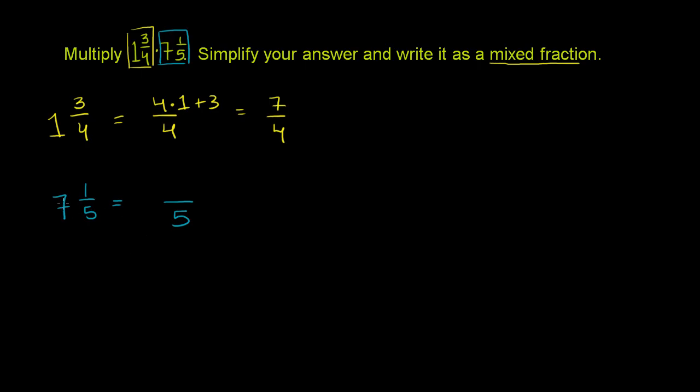And when you take 5 times 7, because think about it, 7 is the same thing as 35/5. So you take 5 times 7, plus this numerator right here. So 7 is 35/5. Then you have 1 more fifth. So you're going to have 35 plus 1, which is equal to 36/5.